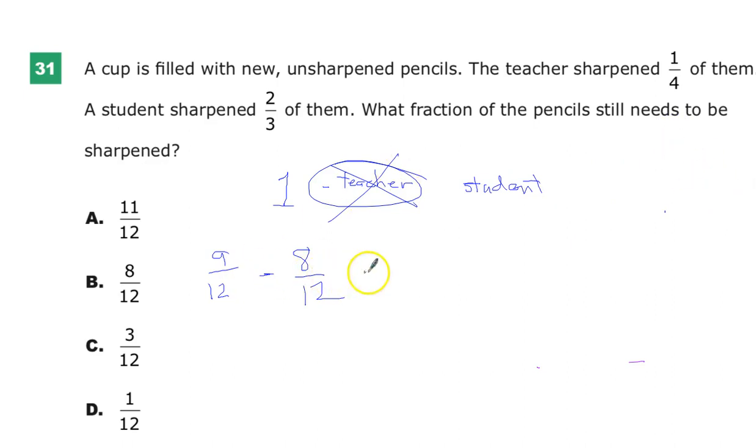So this is what I'm dealing with. Nine-twelfths minus eight-twelfths. Now that I have it broken up into the same size pieces, I just subtract nine minus eight, and I get one. So my answer to number thirty-one is D. One-twelfth. So the teacher and the student did a lot of the work. The student did more, but whatever. So you're left with one-twelfth. So your answer to number thirty-one is, of course, D.